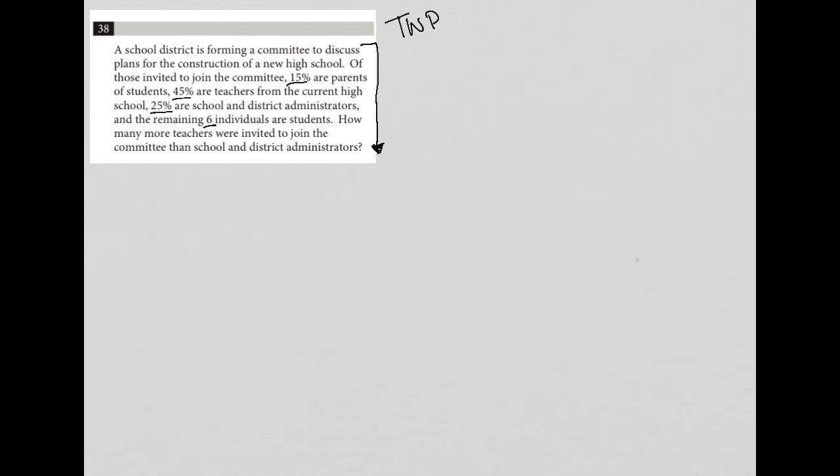This question says a school district is forming a committee to discuss plans for the construction of a new high school. Of those invited to join the committee, 15 percent are parents. Okay, so we don't know how many are invited to join. So X invited to join. But out of that X, we have 15 percent are parents, so 0.15 times X equals parents.